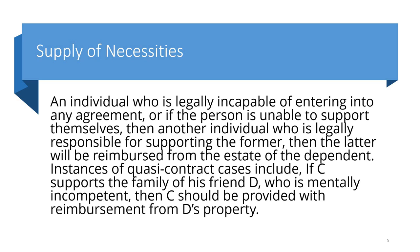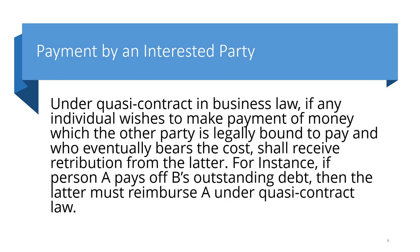The second type is payment by an interested party. Under quasi-contract in business law, if any individual makes payment of money which another party is legally bound to pay, and who eventually bears the cost, they shall receive reimbursement from the latter. For instance, if person A pays off B's outstanding debt, then B must reimburse A under quasi-contract. If you are paying on someone's behalf, you can collect that money from them — that is a quasi-contract.